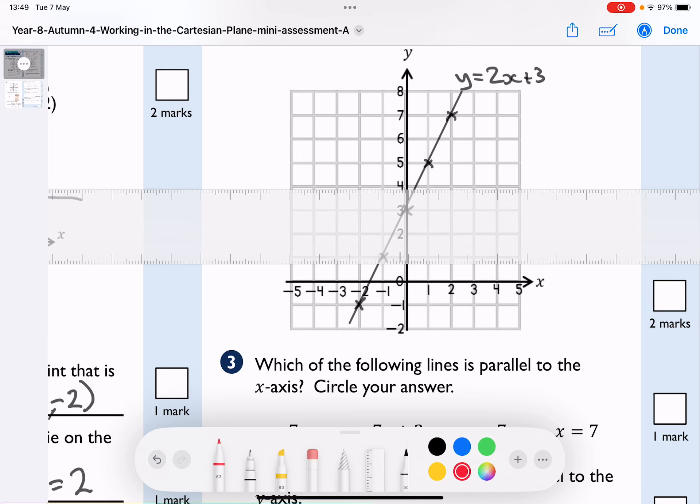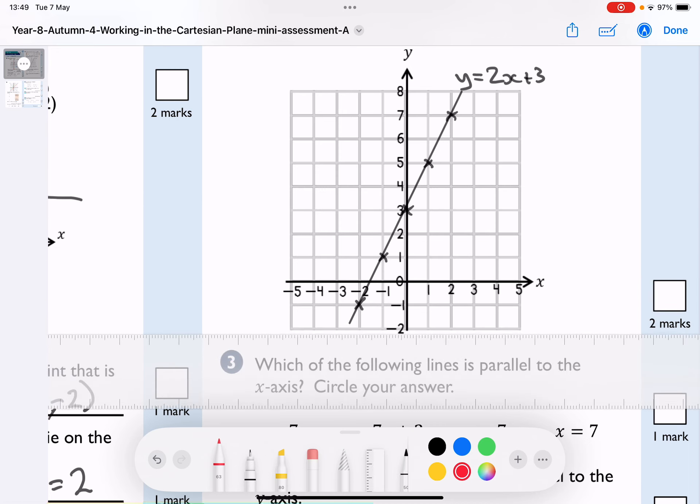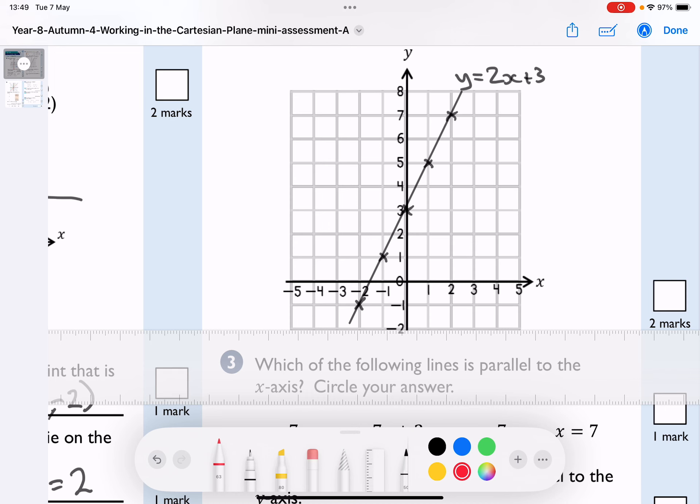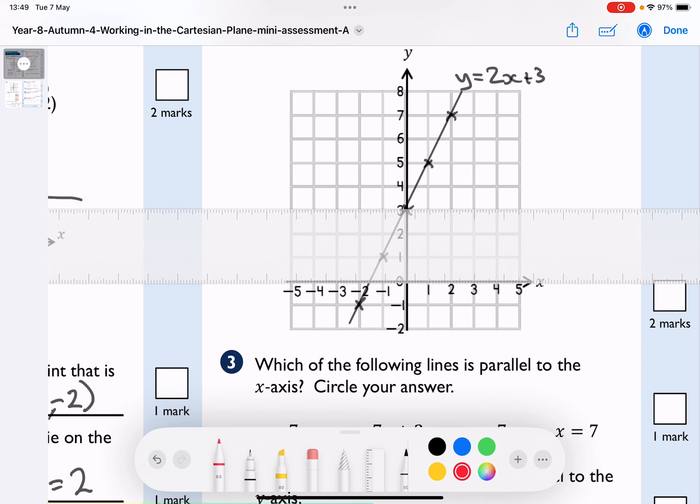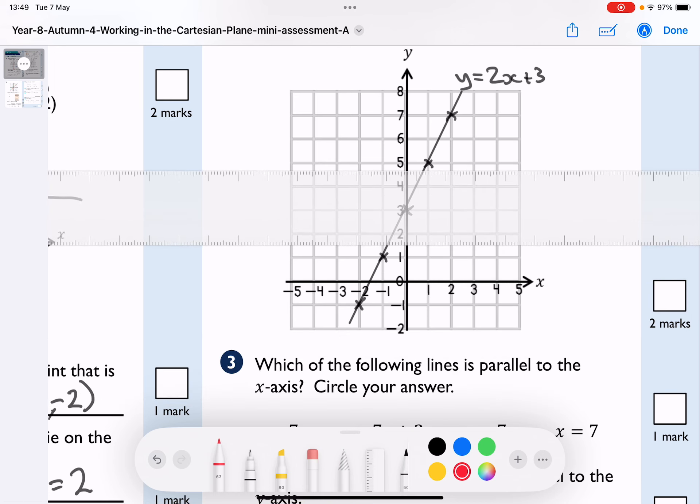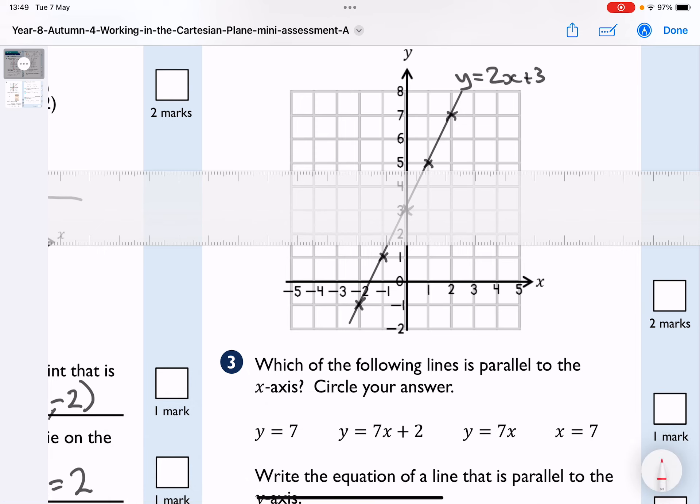If I move it up, I can see it's going through where y equals 4. If I move it down, I can see it's going through where y equals negative 2.